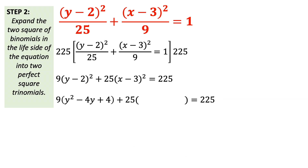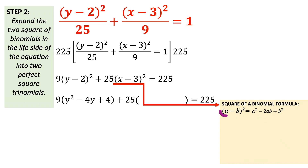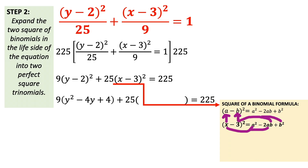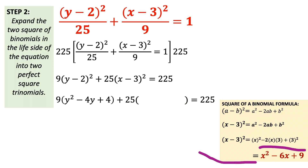Now let's expand the second square of a binomial. We use the same formula since (x minus 3) squared is of the form (a minus b) squared. Since x corresponds to a and 3 corresponds to b, substituting into the formula gives us x squared minus 2 times x times 3 plus 3 squared. Simplifying, we get x squared minus 6x plus 9, which replaces the second square of a binomial in the equation.